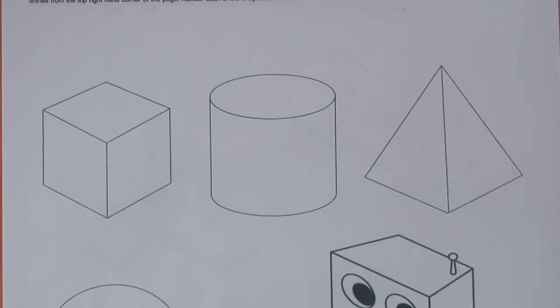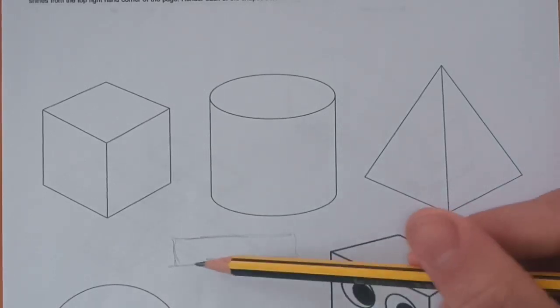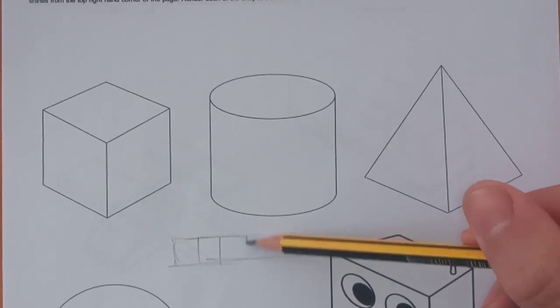The next task we're going to look at is three-dimensional rendering. As I showed in the first video, this can often be made simpler if you create yourself a color palette for a start by drawing out a rectangle, dividing it up into five equal segments.